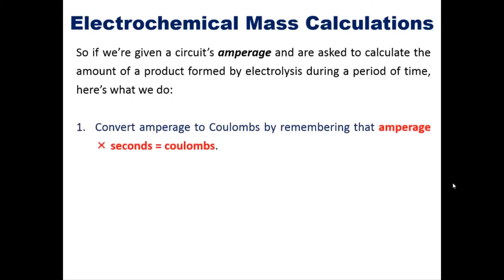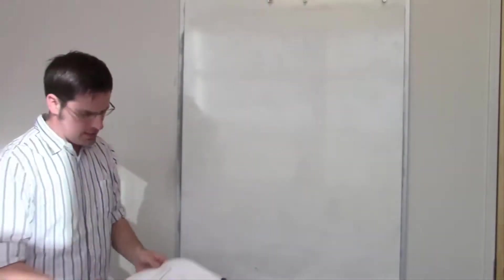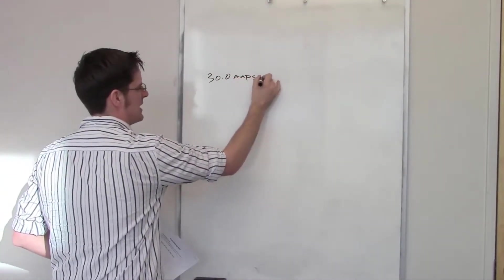The first one is we need to convert the amperage to coulombs by remembering that amperage times seconds equals coulombs.